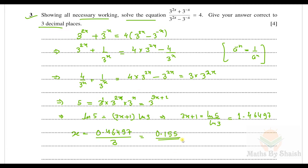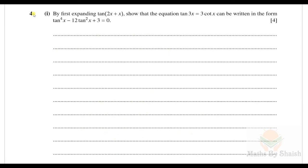So x ≈ 0.155 to three decimal places. Note there are other ways to approach this — for example, multiplying both sides by 3^x earlier gives 5 directly. Now let's do question number four, first part: by expanding tan(2x+x), show that the equation tan 3x = 3 cot x can be written in a specific form.